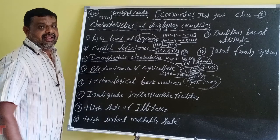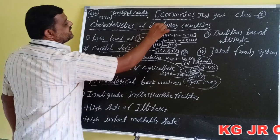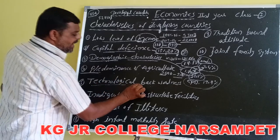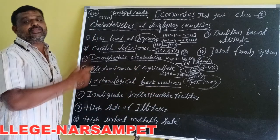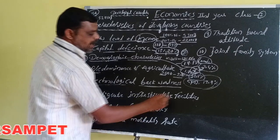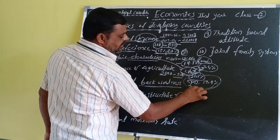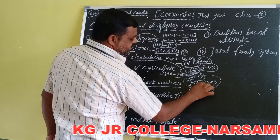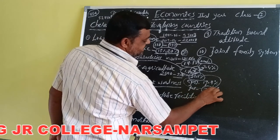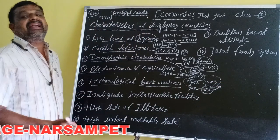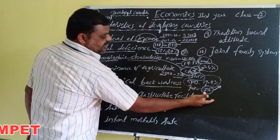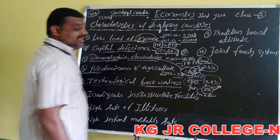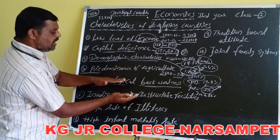Technological backwardness is also one of the important characteristics of developing countries. The main reason is low level of investment in research and development. For example, Japan invests 3% of its national income in research, development, and technology, whereas India invests just 0.82% — these are the reasons for technological backwardness.